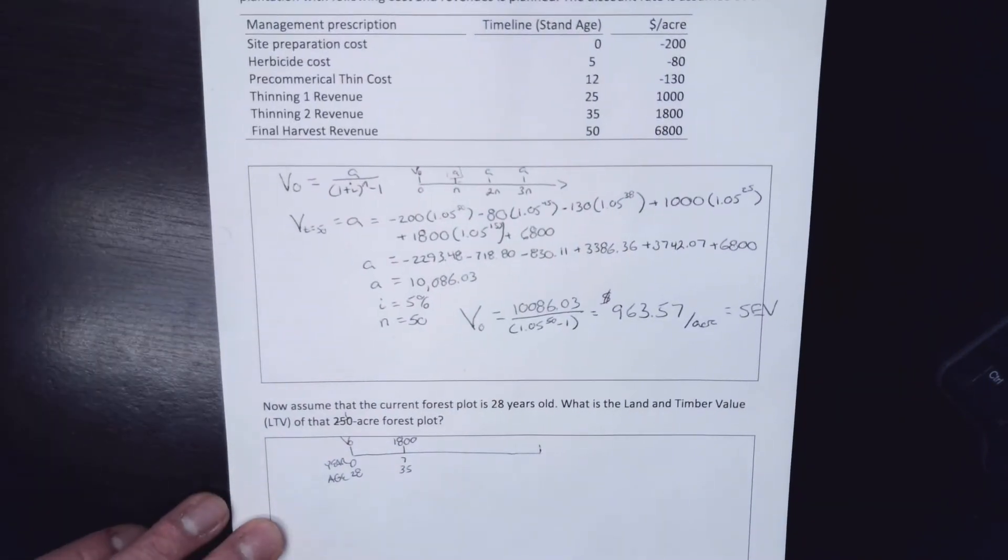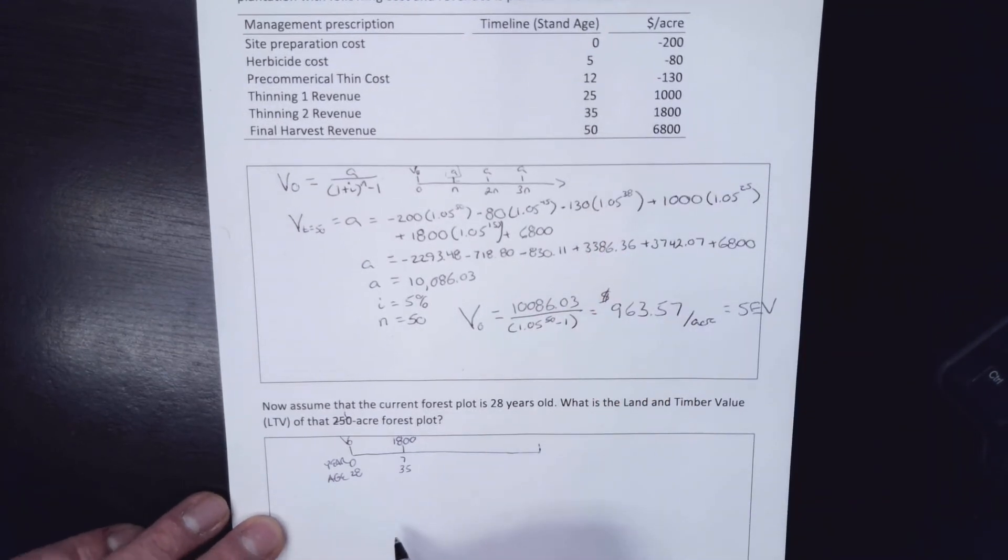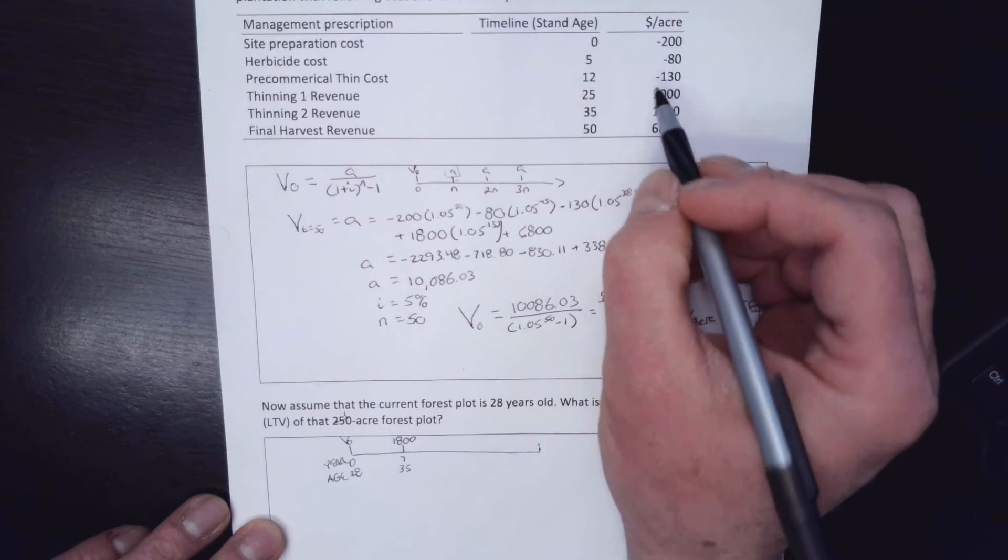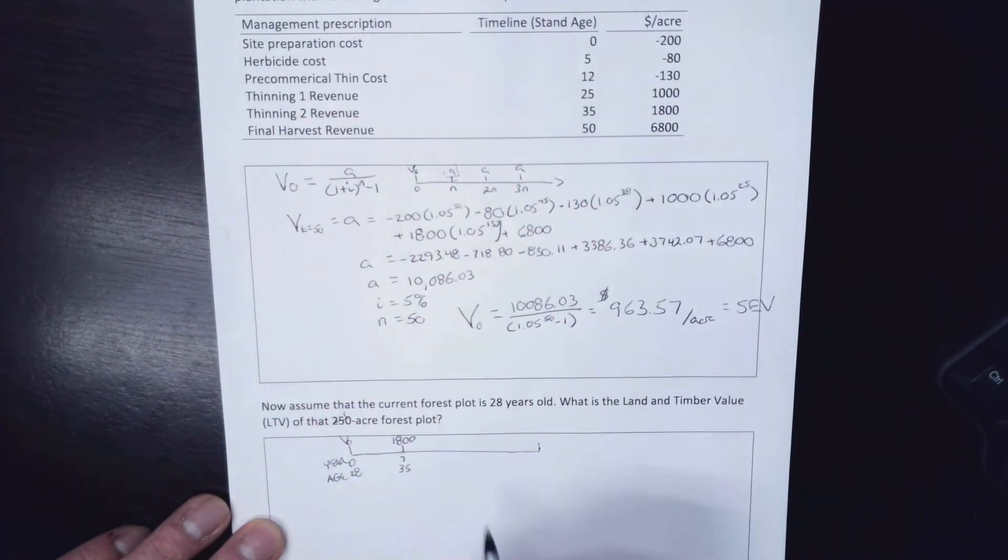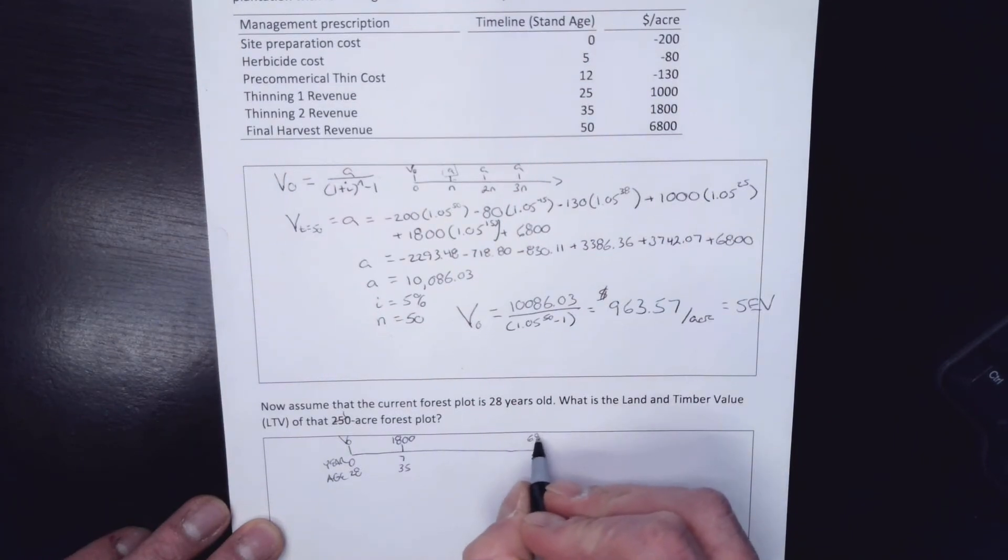Okay. And then another thing that happens just before the end is at 50, I'm going to cut it and get $6,800. And that, because I'm 28, is going to be 22 years in the future at stand age 50. I get $6,800.